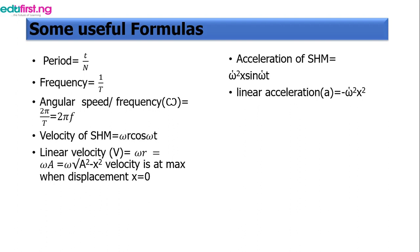The velocity of simple harmonic motion equals omega r cos(omega t). The linear velocity equals omega times the square root of a squared minus x squared. Velocity will be at maximum when displacement equals zero — so automatically, when displacement is zero, our velocity equals omega a, which is the amplitude, or omega r, which is the radius.